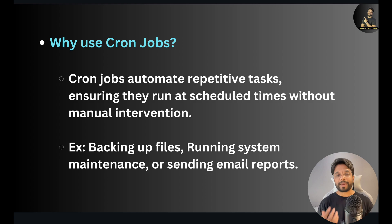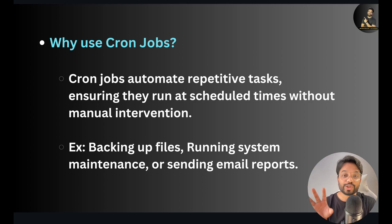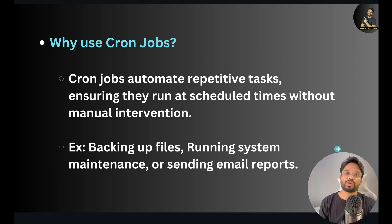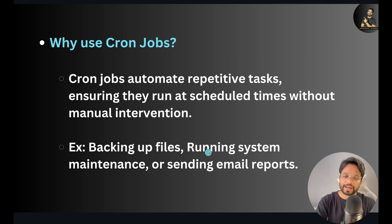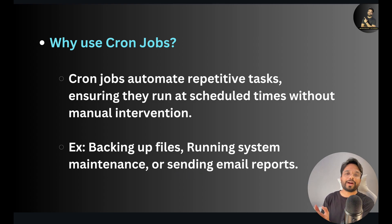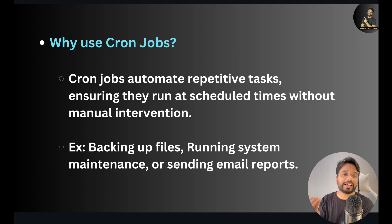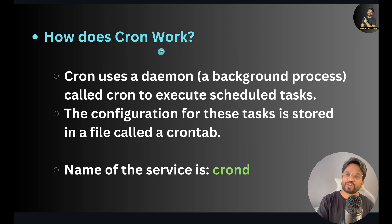Here are some examples of tasks you can automate using cron jobs: backing up files — for example, taking a backup every weekend — running system maintenance, sending email reports, or restarting a deployed application every weekend or every month. You can do all of this simply and easily using cron jobs. Now let's see how cron works.